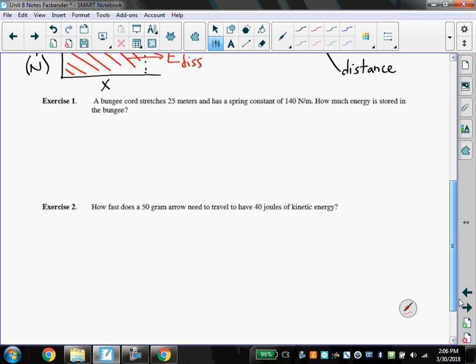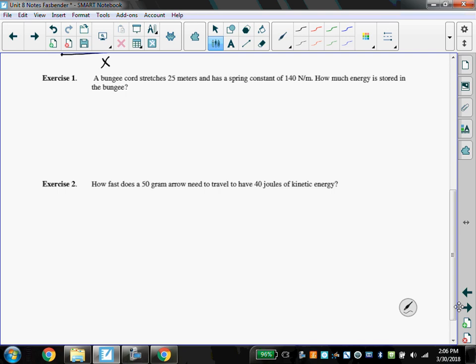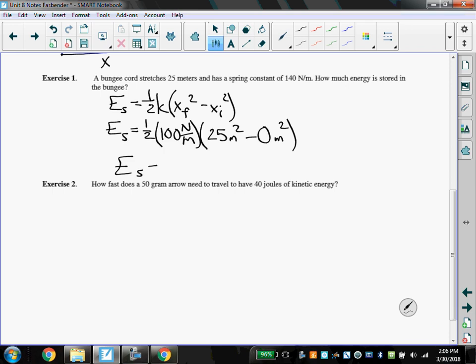Okay, so now that we've learned these four equations, let's do two really fast example problems just to make sure that we are comfortable with using them. A bungee cord stretches 25 meters and has a spring constant of 140 newtons per meter. How much energy is stored in the bungee? Well, if we are stretching a bungee cord, then we have spring energy. So we'll use the equation one half K times XF squared minus XI squared. And luckily, they give us basically everything we need to know. They tell us that the K is 100 newtons per meter. They tell us the stretch is 25 meters. We can assume that it has an initial stretch of zero. And when we punch that into our calculator, we get that the spring energy is 43,750 joules. So that wasn't too bad. That was very plug and chug, just making sure that we are comfortable with the equation.